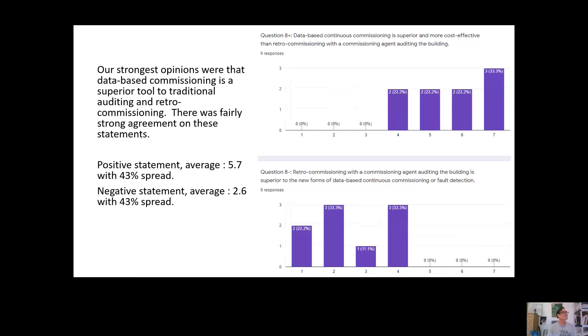This next question is even more interesting because the question was database continuous commissioning is superior and more cost effective than retro commissioning with the commissioning agent auditing the building. The negative version being retro commissioning and commissioning with an agent is superior to these new fangled forms of database continuous commissionings. This was our strongest opinion. We definitely agreed with the positive statement. We definitely disagreed with the negative statement and our agreement on these was fairly strong. This is a commentary on the state of affairs in ASHRAE. ASHRAE doesn't even have a standard or guideline for database commissioning or database continuous commissioning. The guideline zero, guideline one, the ASHRAE standards and ASHRAE guidelines that we have on commissioning are entirely dedicated to the boots on the ground type of commissioning that we all said was the inferior technology.